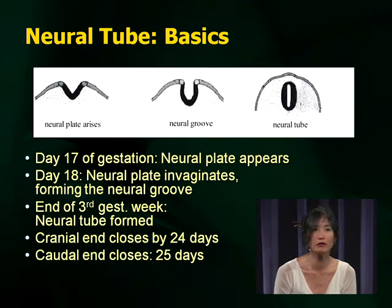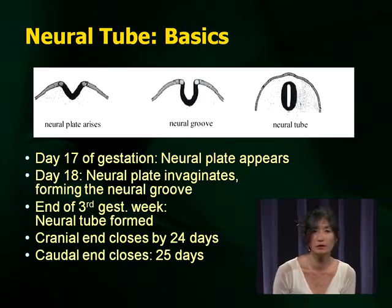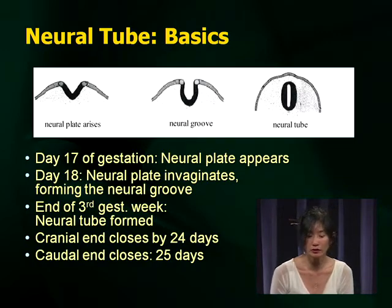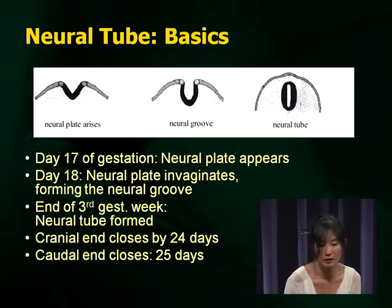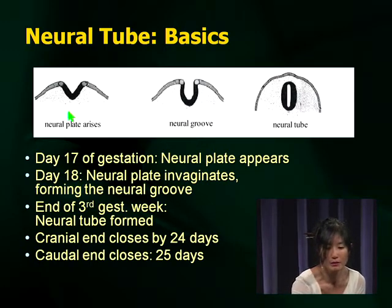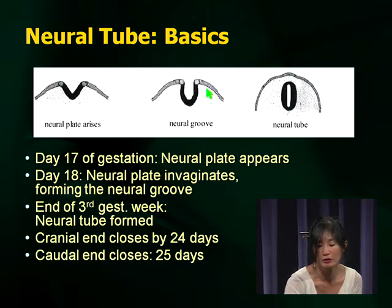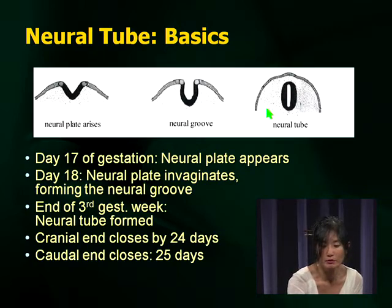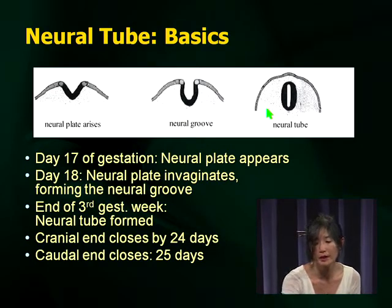Neural tube defects occur in the first trimester, which is why there's such emphasis on folate supplementation early on and why the public health movement has brought forth folate supplementation. Remember there are multiple stages in the formation of the neural tube, starting with the neural plate coming together, the formation of the neural groove, and finally the neural tube — a progression that finishes by about the fourth week.